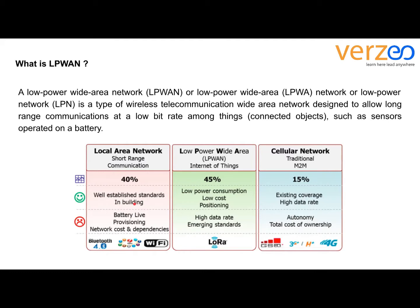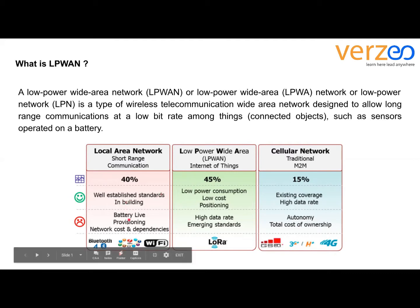The advantage of LAN is that it is a well-established standard in buildings, schools, and offices. LP-WAN offers low power consumption, low cost, and better positioning. The main difference with cellular network is that LP-WAN covers a particular coverage area, while cellular network covers an existing broader coverage at high data rates.